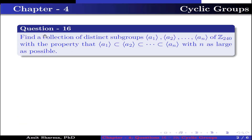Question number 16: Find a collection of distinct subgroups generated by a1, a2 up to aN of Z240, with the property that the subgroup generated by a1 is contained in the subgroup generated by a2, and so on, contained in the subgroup generated by aN, with N as large as possible.